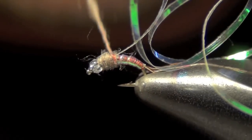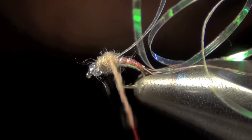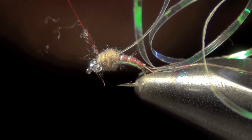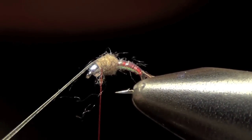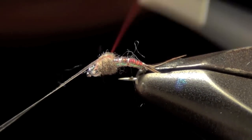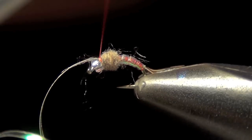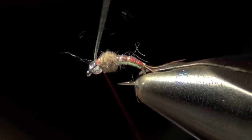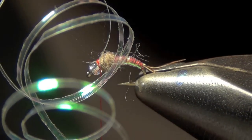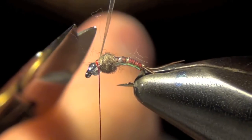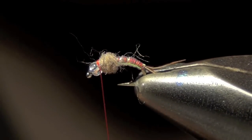Once I've done that, I'm just going to build it up just a little bit and I'm going to bring my thread right to that bead and I pull that piece of flashback material over the top. Secure it down. Then you can trim it out and whip finish.